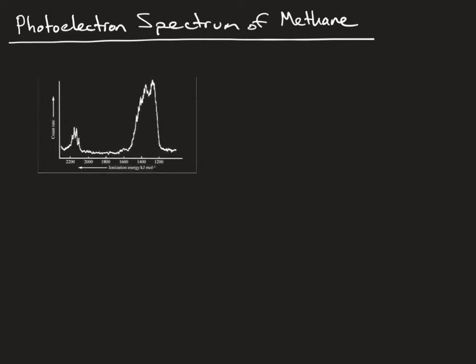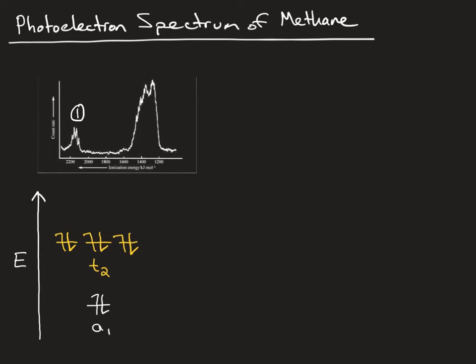This is the photoelectron spectrum obtained from methane. It has been said that this spectrum is proof that MO theory provides a valid description of the bonding in methane. In the MO diagram, peak 1 correlates with ejection of an electron from the A1 molecular orbital, while peak 2 corresponds to ejection from the T2 set — with it being three times more likely that you'll eject a T2 type electron than an A1 type electron.